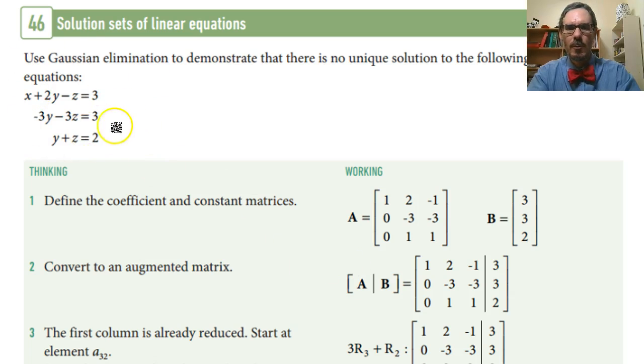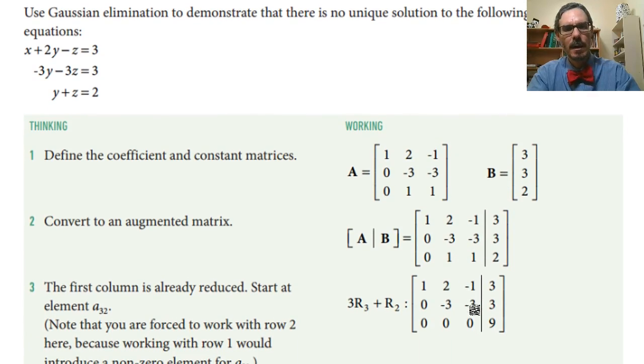If I then try to solve this matrix using the usual row operations, because there's a 1 here and a 1 here, when I try to eliminate this, I end up with 0s across the whole row.